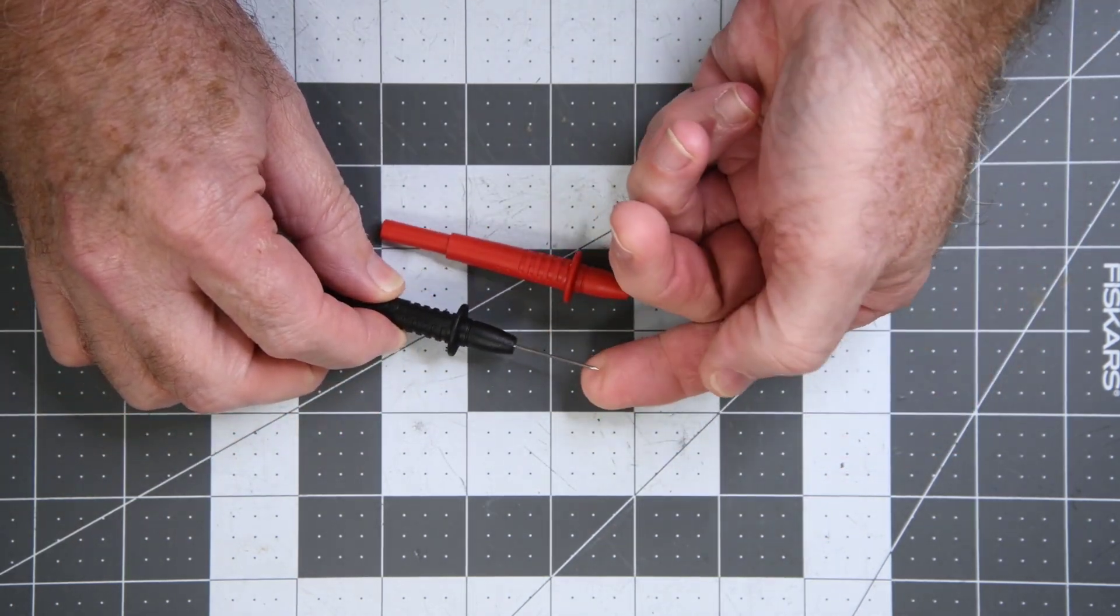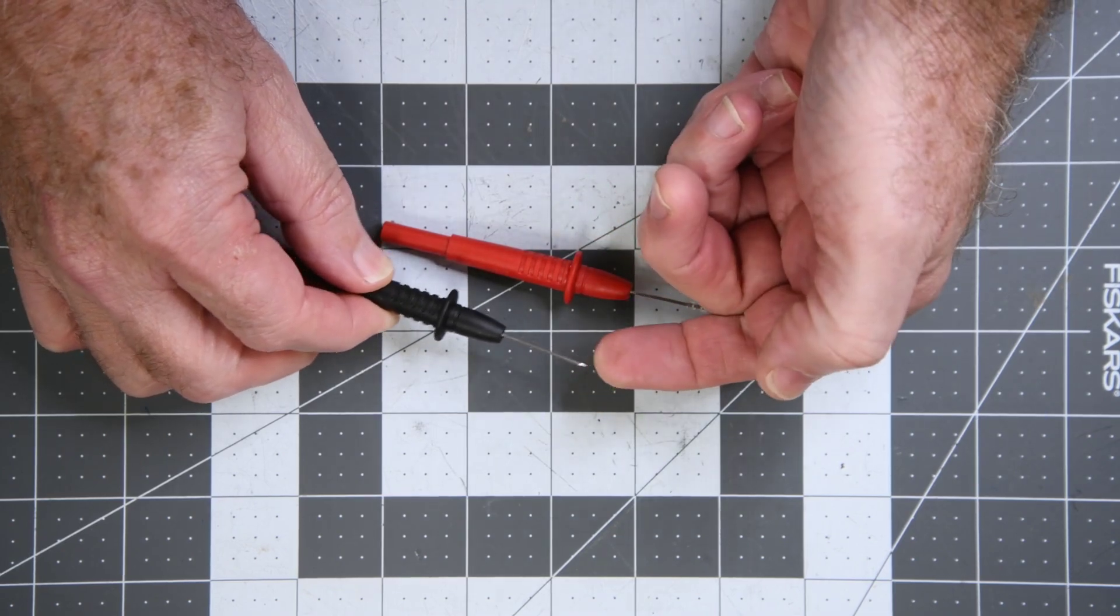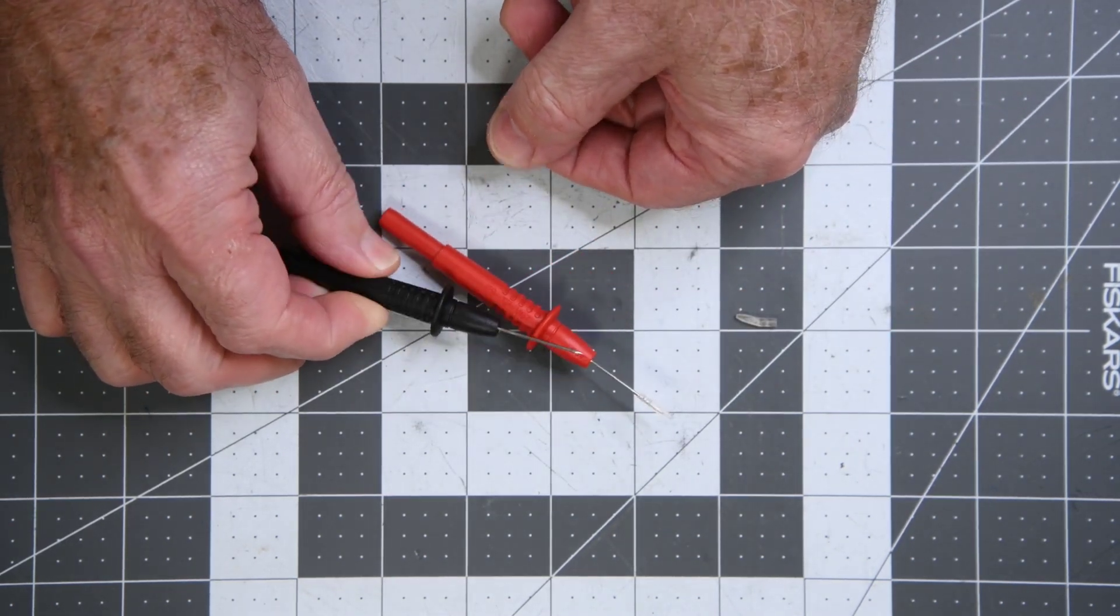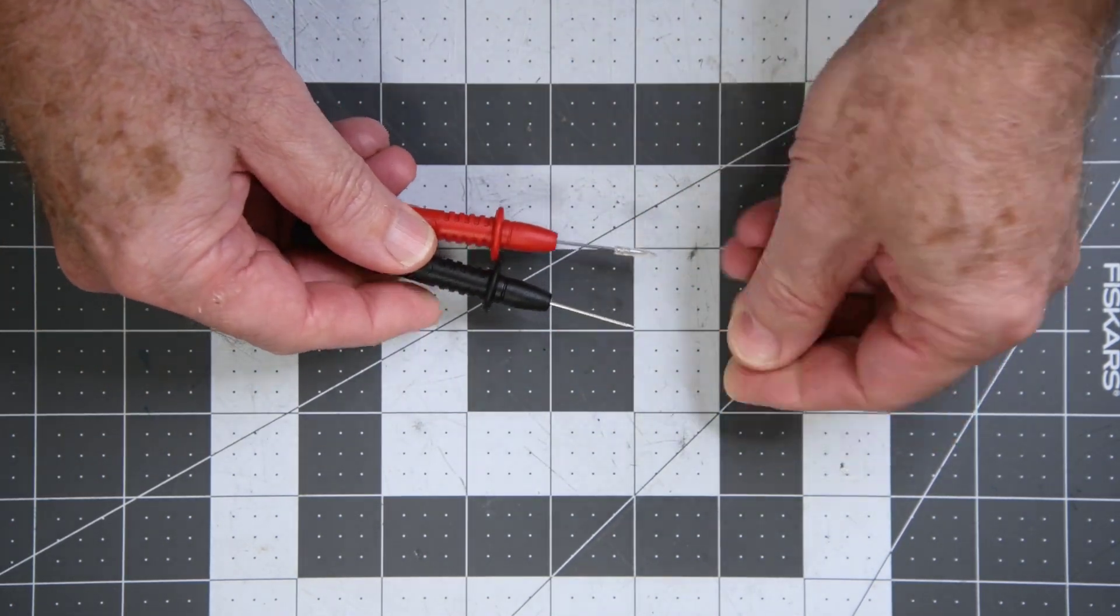These are basically the same thing with the standard probe tip replaced with a longer, thinner, sharper tip. These might do well on small pitch IC leads.